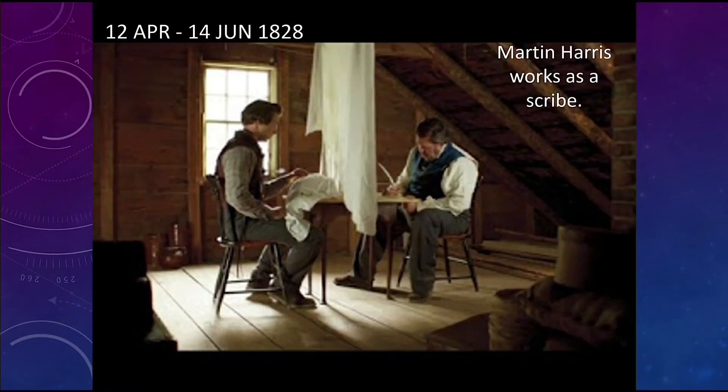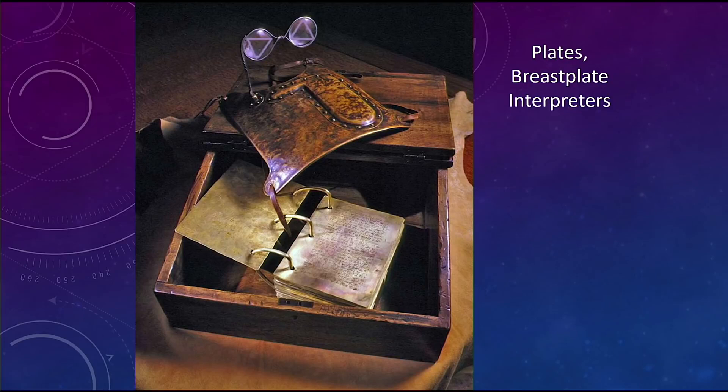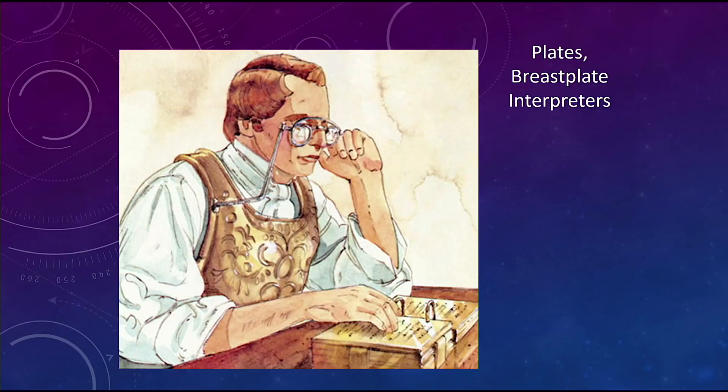This is the interior of the home. They were translating upstairs, probably with Martin Harris. This is one artist's depiction of the translation of what we call the 116 pages, which was the Book of Lehi — with the Urim and Thummim, plates, and breastplate. This is based on historical accounts, not imagination. So all those people who say he used a stone and a hat — there is another version of reality that we can support here.